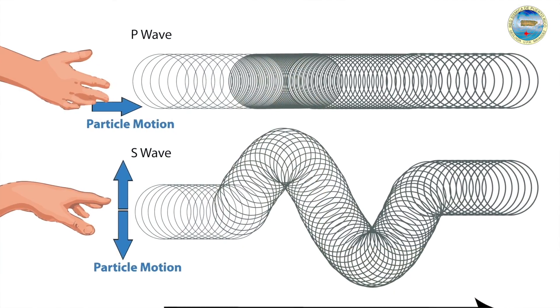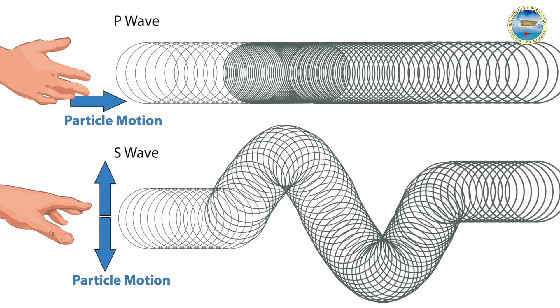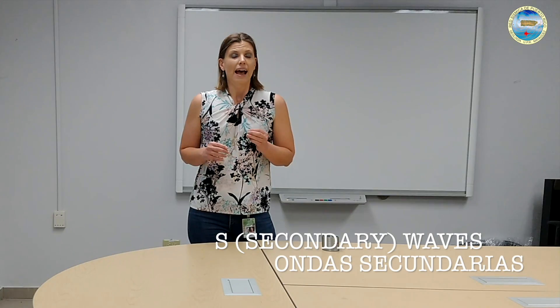Today I'm going to talk a little bit about the different types of waves you find in an earthquake. An earthquake isn't just a simple explosive source event. When you have an earthquake, you have multiple types of waves produced. There are three major types of waves: the P wave, or primary wave; the S wave, or secondary wave; and the third one are the surface waves.